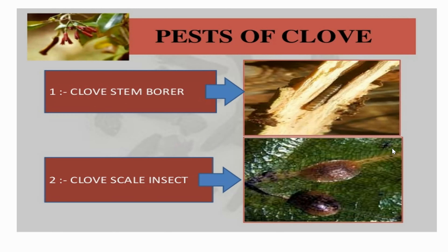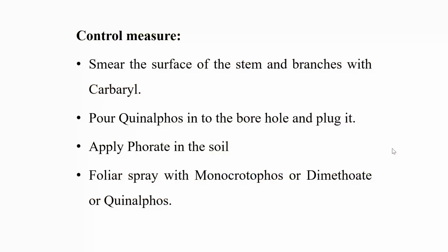Stem borer, black skin, and leaf-eating caterpillar are the common pests in clove. To control these pests, smear the surface of the stem and branches with carbaryl powder, force phenol into the bore hole and plug it, apply phenol in the soil, and do foliar spray with monocrotophos or dimethoate and phenol.